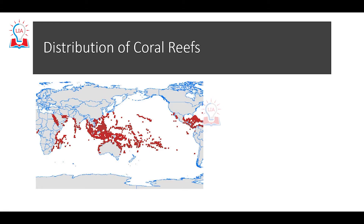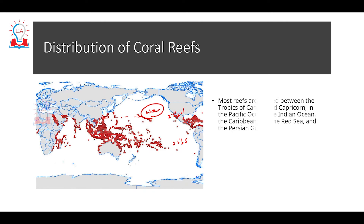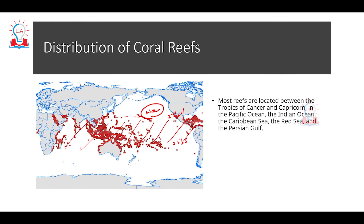Coral reefs require warm water, which is why most coral reefs are found along the equator and between the Tropic of Cancer (23.5° North) and the Tropic of Capricorn (23.5° South). You can see on the map that the red marks indicating coral reef locations mostly lie along this belt, though coral reefs along the coast of Australia extend beyond this tropical zone.